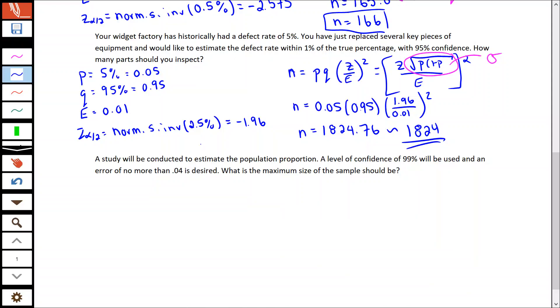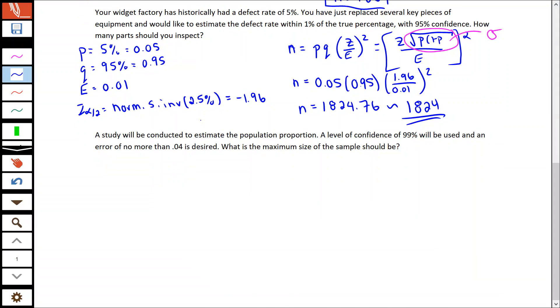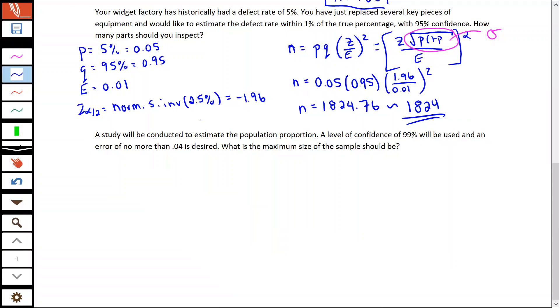The last question says that a study will be conducted to estimate the population proportion. A level of confidence of 99% will be used, and an error of no more than 0.4 is desired. What is the maximum size of the sample should be? Anytime it talks about finding the maximum sample size or it's saying conservative estimate or P is unknown, all this is trying to tell us is to use a P of 50%.